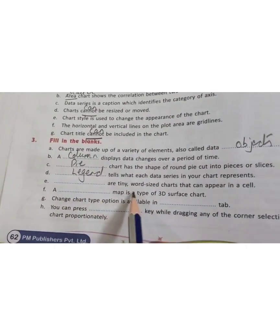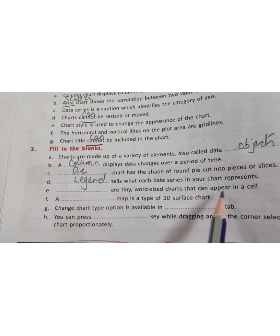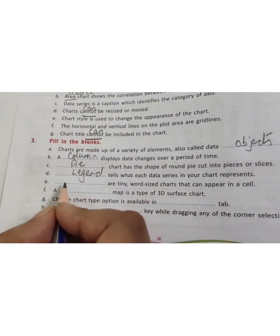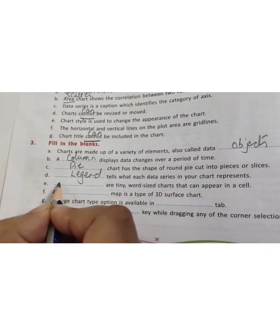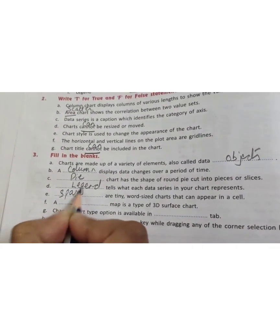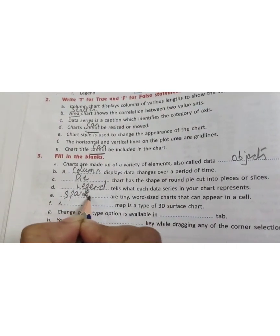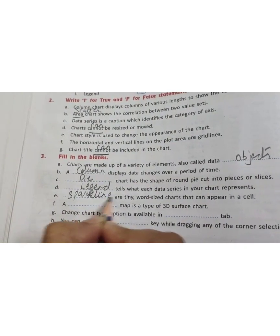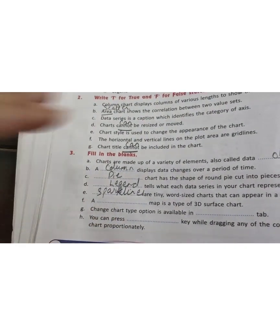Sparklines are tiny word size charts that can appear in a cell. That is graph lines, part lines. Let's write it again.